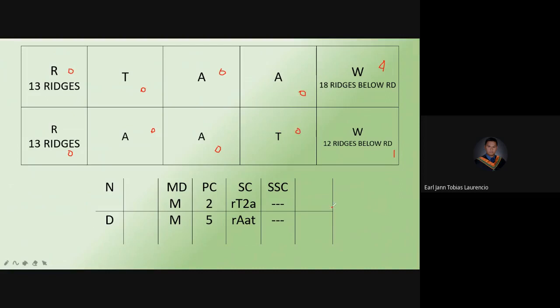The secondary classification is: numerator — small r, big T, 2A; denominator — small r, big A, small a, small t. Correct. The sub-secondary has all dashes because the patterns on the right index, middle, ring, and the left hand are all arc, plain, and tented.